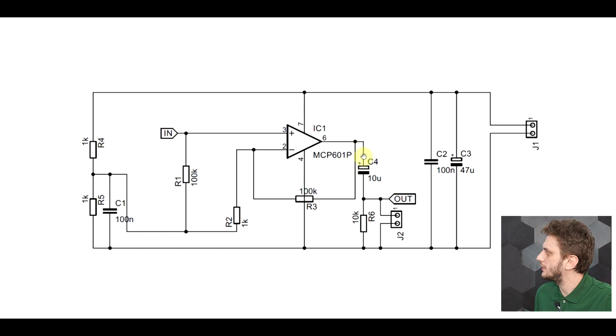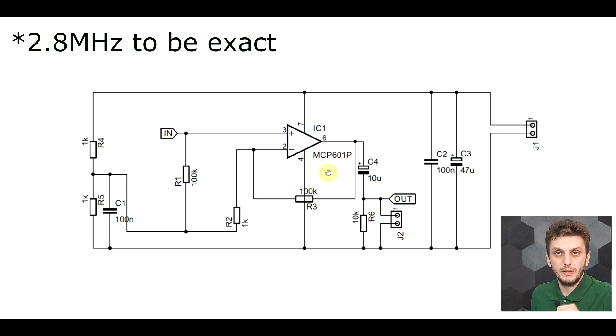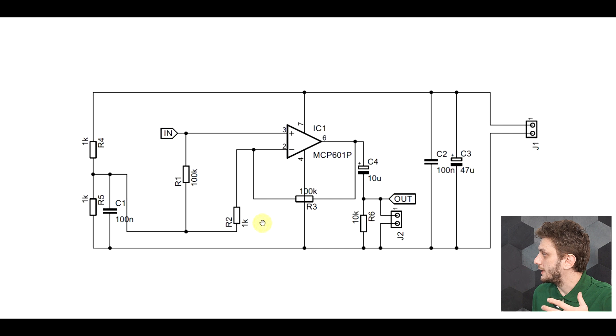Now it's important to observe that this amplifier has a gain bandwidth product of about 2 MHz, so with this sort of high gain, your bandwidth will be limited to about 10-20 kHz. So any sort of noise that we want to inject into it needs to be below this threshold.